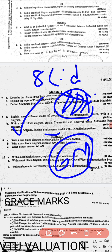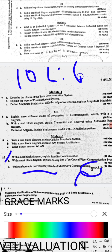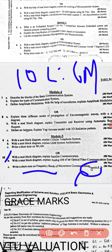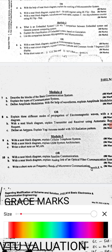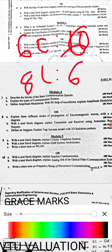For 10C, it is about frequency bands of microwave, which is not in the syllabus — that's why grace marks are given. It is also 6 marks. So for 10C, even if you just put the question number, you will get 6 marks.